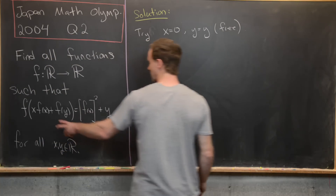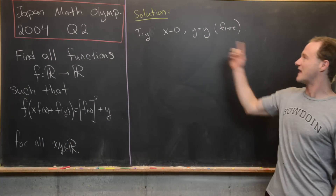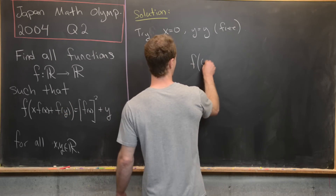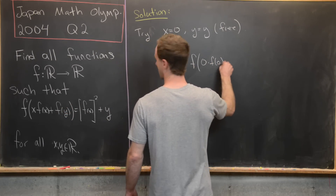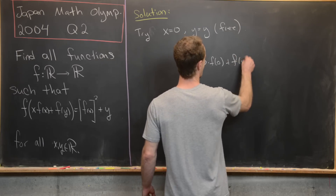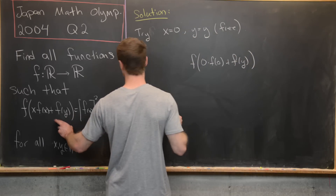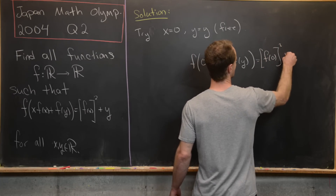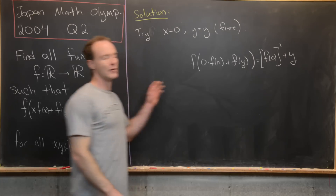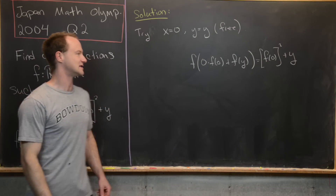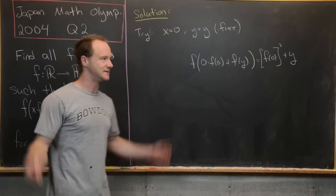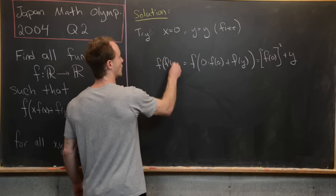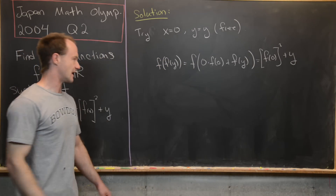Let's rewrite the condition with that setup. We have f(0·f(0) + f(y)) on the left-hand side, which equals f(0)² + y. We can simplify the left-hand side since 0 times anything is 0, giving us f(f(y)) = f(0)² + y.